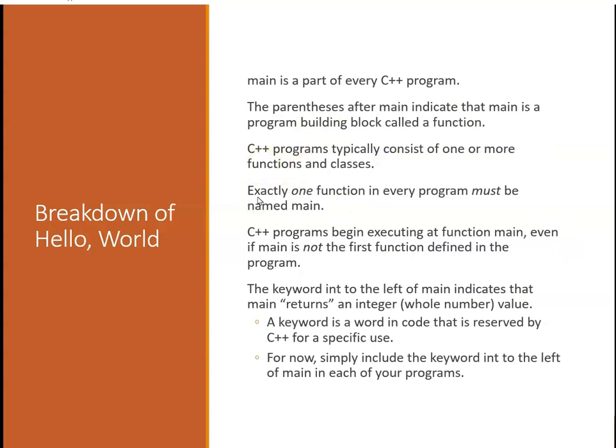Every C++ program begins with the main function. The parentheses after main indicate that main is a function. C++ programs typically consist of one or more functions and what are called classes, which we'll come back to later. Exactly one function in every program must be named main - if you have more than one main you'll get an error. C++ programs begin executing at main, even if main is not the first function defined in the program file. The keyword int to the left of main indicates that main returns an integer. A keyword is a word in code that is reserved by C++ for its use. For now, simply include the keyword int to the left of main in each of your programs.